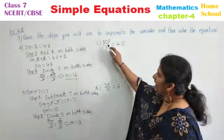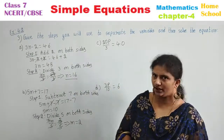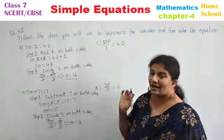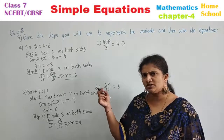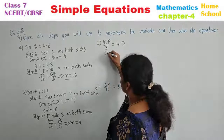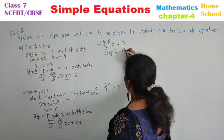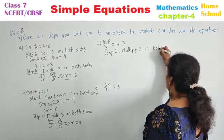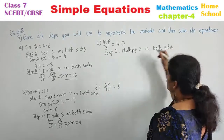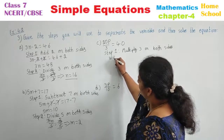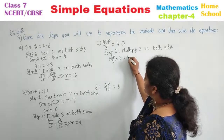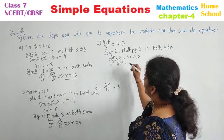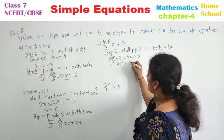Third problem: 20P by 3 is equal to 40. The number which is beside the variable — don't touch. Other than that, what do you have? A number is divided. Division opposite is multiplication. Step 1: Multiply 3 on both sides. 20P by 3 into 3 is equal to 40 into 3. 3 and 3 cancel, you are left with 20P is equal to 120.